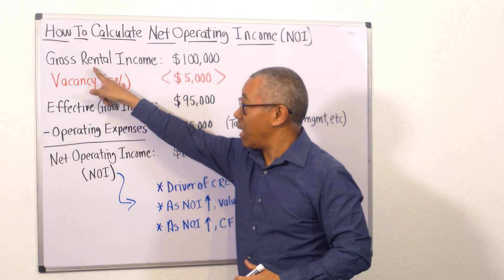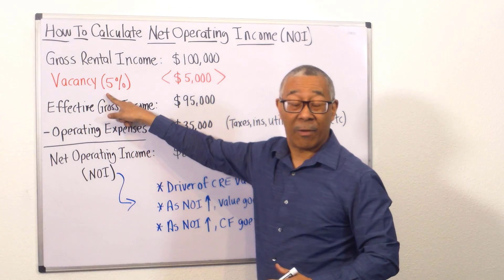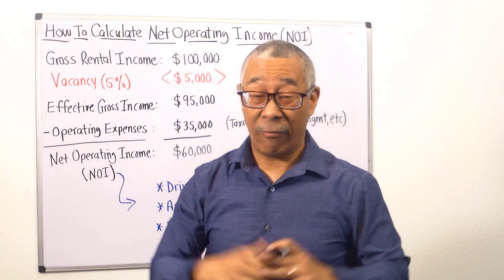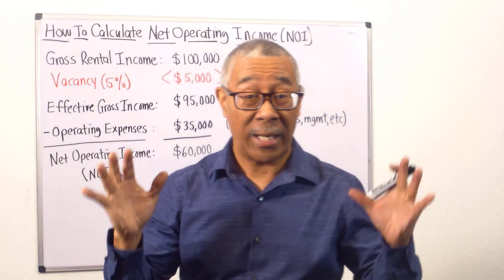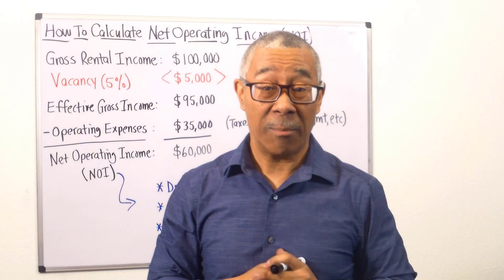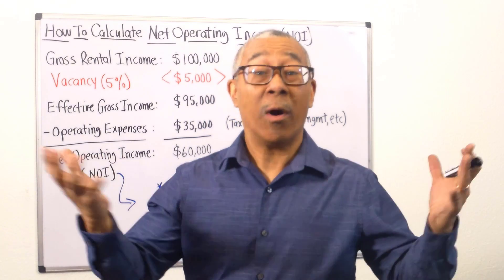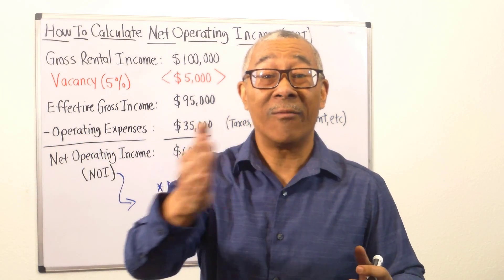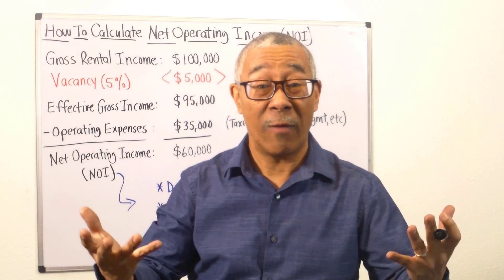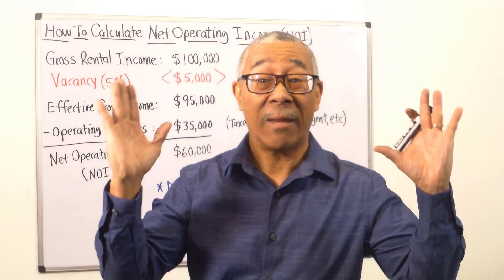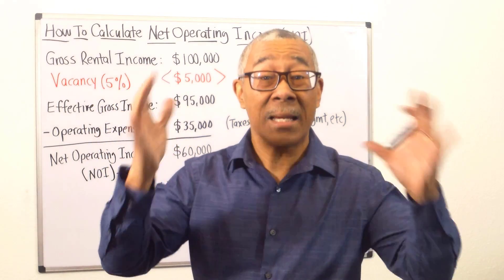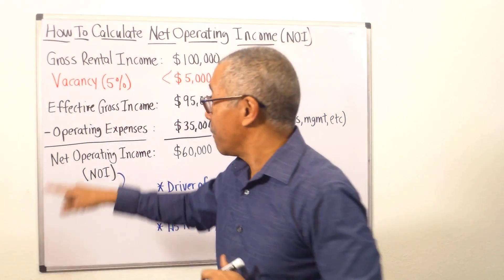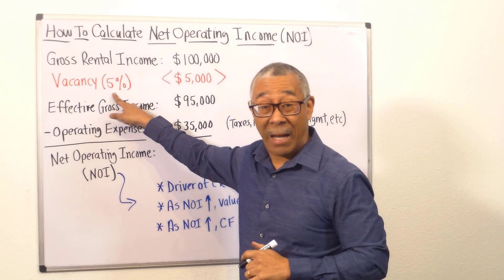To calculate your NOI, you're going to subtract a 5% vacancy factor. Vacancy factor is a safety factor, and the reason why you need to include it is because you cannot anticipate your 12-unit apartment building to be 100% occupied for the entire 12 months. You're going to have a vacancy — someone will move out. So we need to anticipate that by including a vacancy factor. The industry standard is 5%.